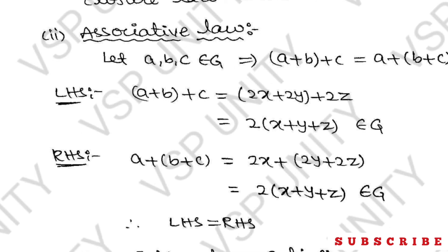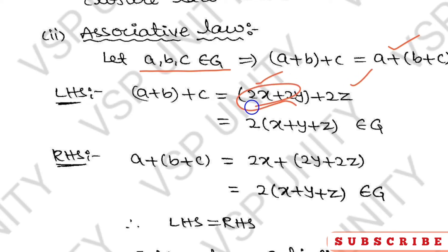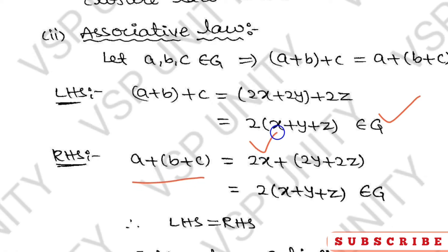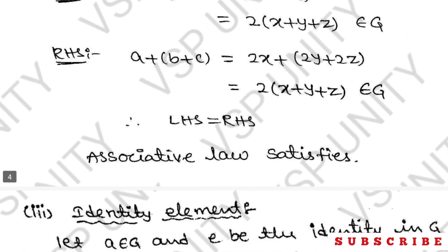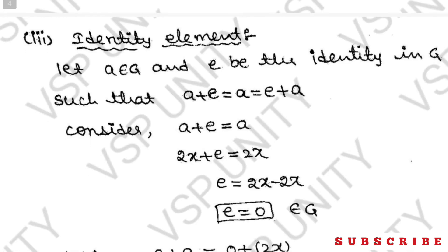Associative property: we need to prove (a + b) + c = a + (b + c). LHS: (2x + 2y) + 2z = 2(x + y + z), which is in G. RHS: 2x + (2y + 2z) = 2(x + y + z), also in G. LHS equals RHS, so associative property is satisfied.